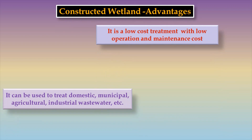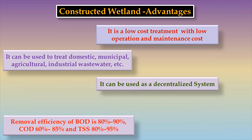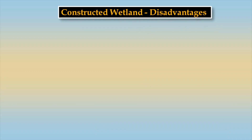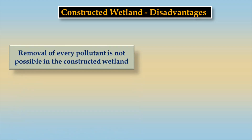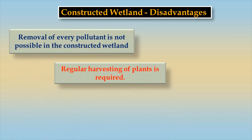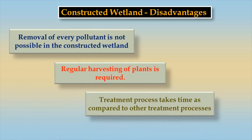Advantages of Constructed Wetland: it is a low-cost treatment with low operation and maintenance cost, and it removes nitrogen and phosphorus. Disadvantages of Constructed Wetland: constructed wetland plants require regular harvesting and it requires a larger area.